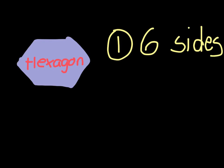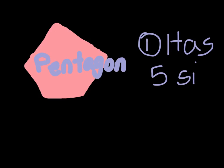I just want to squeeze in one more shape before we go on to our questions. This is called a pentagon. The pentagon has one rule: it has five sides. That's it — we're done with our shapes. Now the last slide is going to be a quiz to see if you guys can identify the shapes we've talked about today.